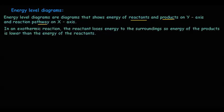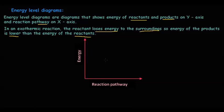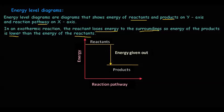In an exothermic reaction, the reactants lose energy to the surroundings, so the energy of the products is lower than the energy of the reactants. The reactants are represented by a line at a higher level and the products at a lower level. The difference in energy between reactants and products gives the energy given out to the surroundings, represented by the symbol ΔH (delta H), also called enthalpy change.